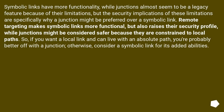Symbolic links have more functionality, while junctions almost seem to be a legacy feature because of their limitations, but the security implications of these limitations are specifically why a junction might be preferred over a symbolic link. Remote targeting makes symbolic links more functional but also raises their security profile, while junctions might be considered safer because they are constrained to local paths. So, if you want a local link and can live with an absolute path, you're probably better off with a junction; otherwise, consider a symbolic link for its added abilities.